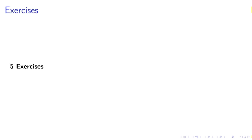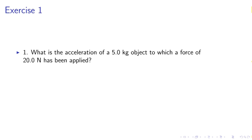Exercise 1. What is the acceleration of a 5 kg object to which a force of 20 N has been applied? Solution: A equals F over m equals 20 N divided by 5 kg. A equals 4 meters per second squared.